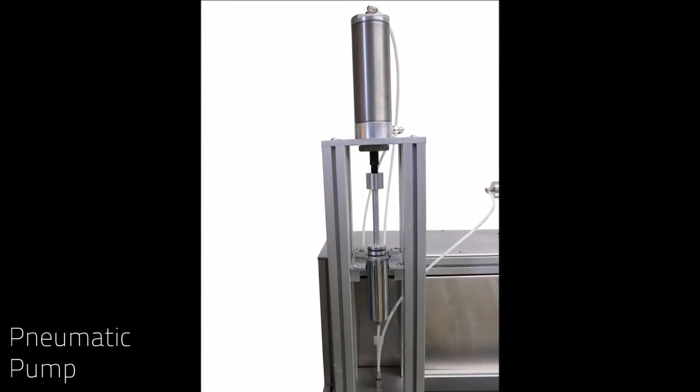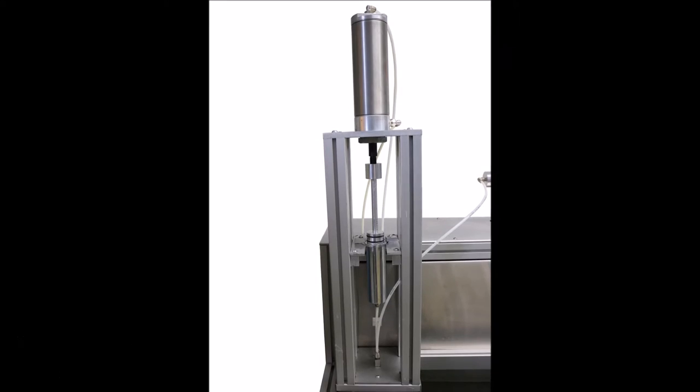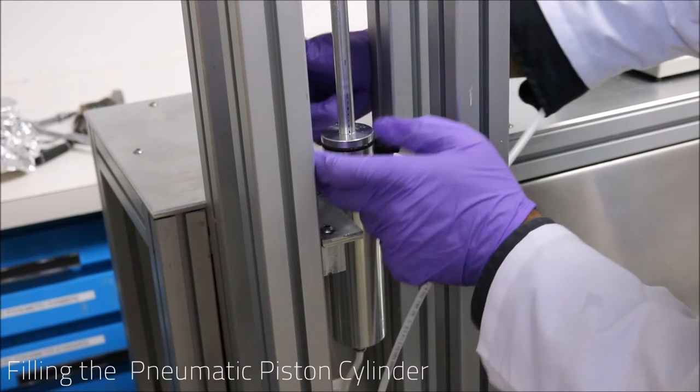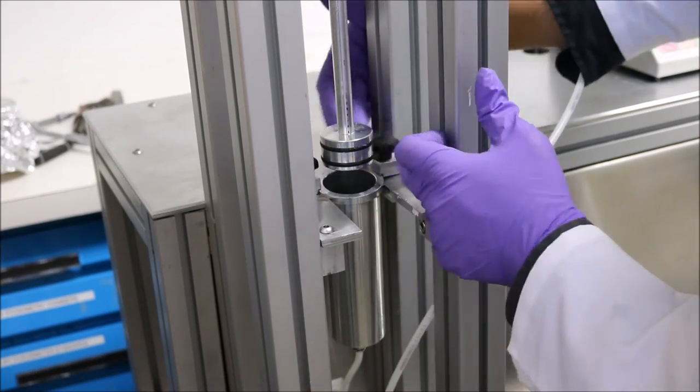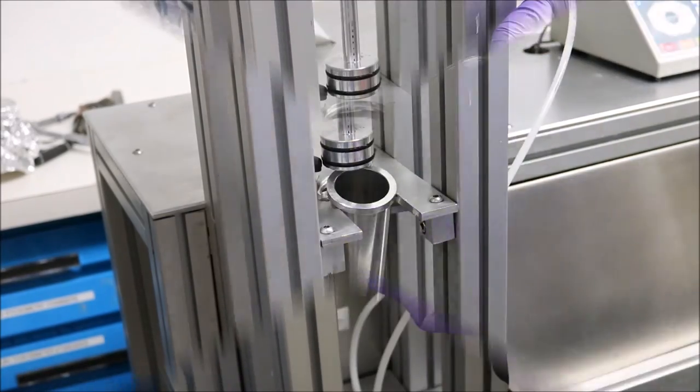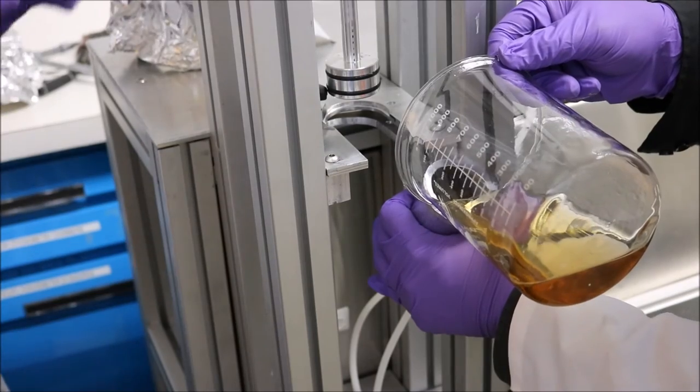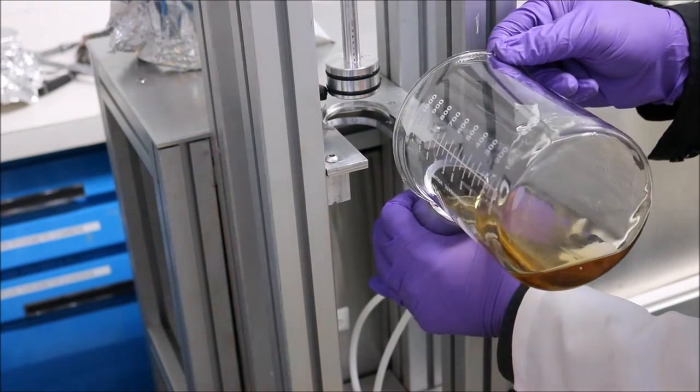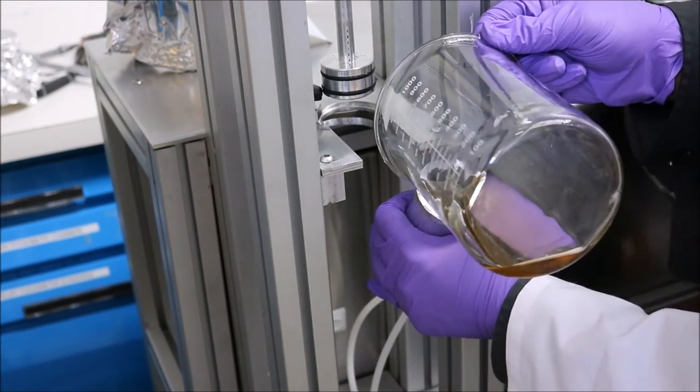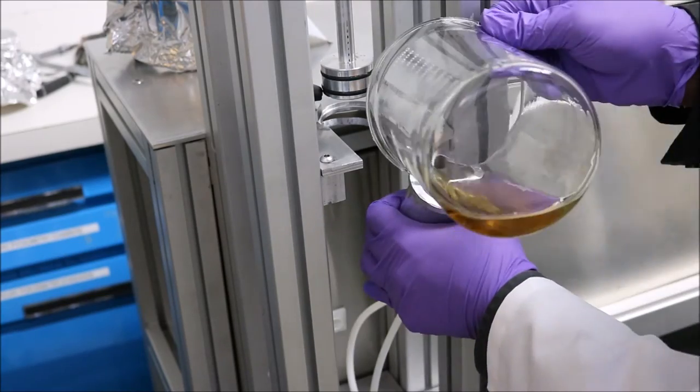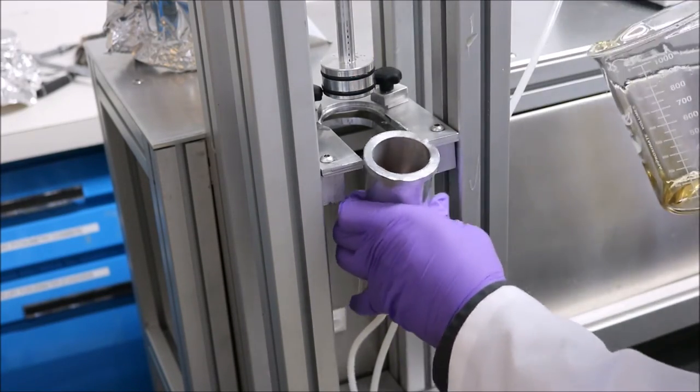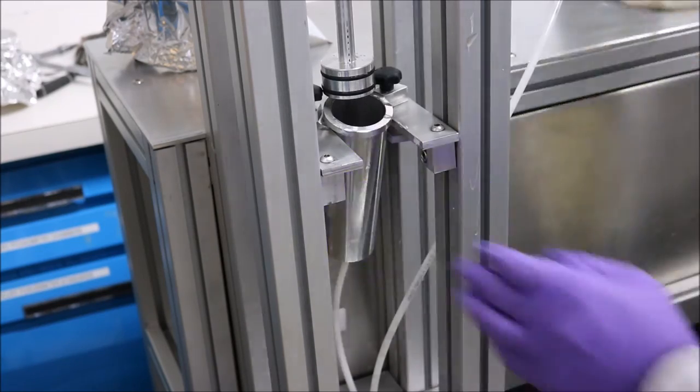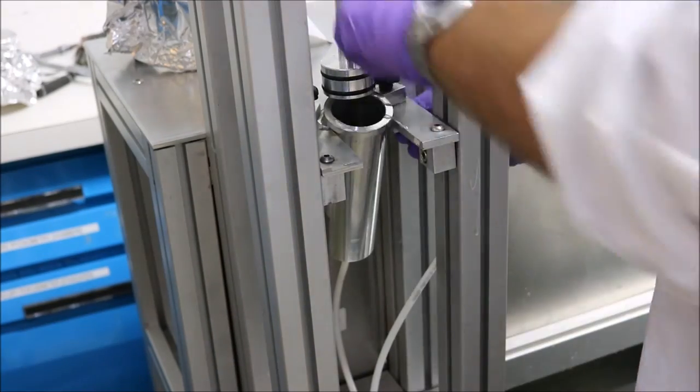The pneumatic pump holds and pumps the polymer solution at a predetermined rate. We need to first loosen the screws around the pneumatic piston cylinder that hold it in place. Next, we will fill the pneumatic piston cylinder with our polymer solution. Carefully pour your polymer solution into the pneumatic piston cylinder, then secure it back into place accordingly.